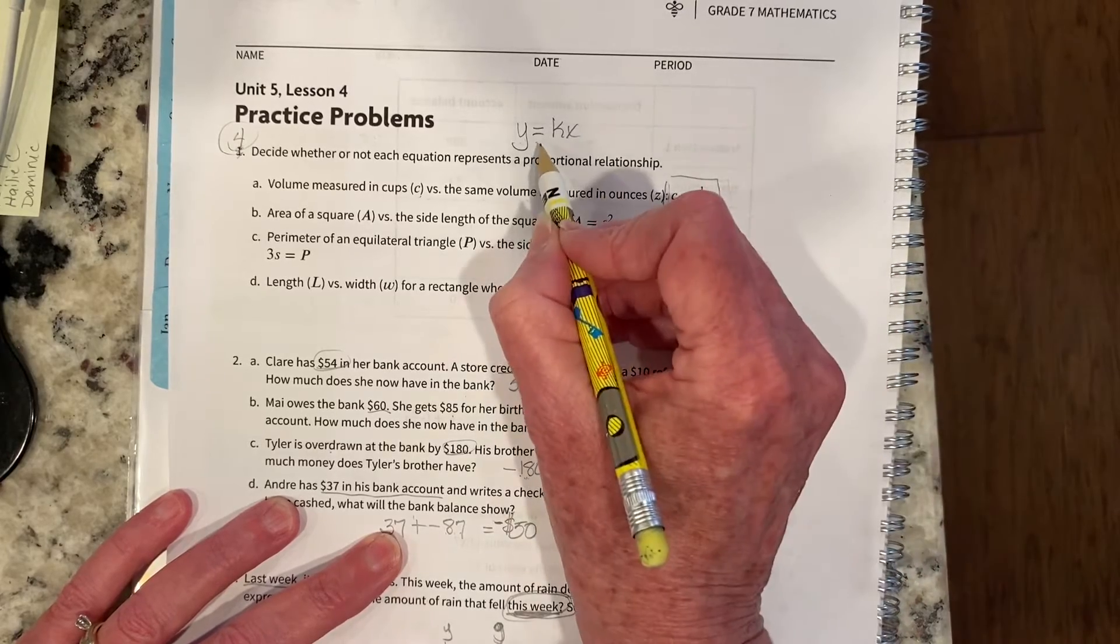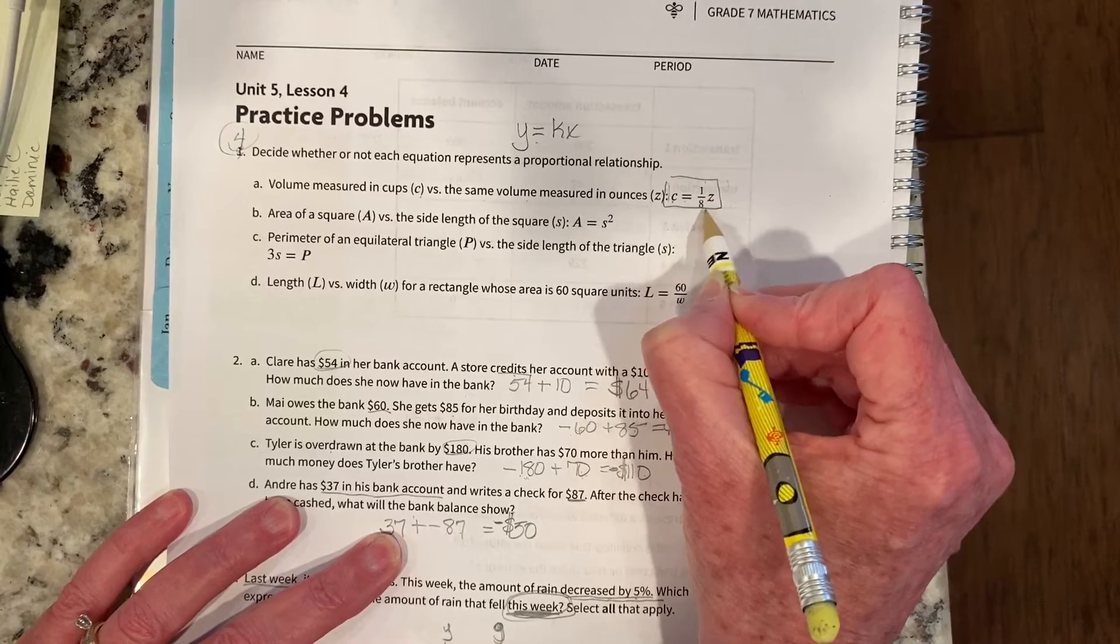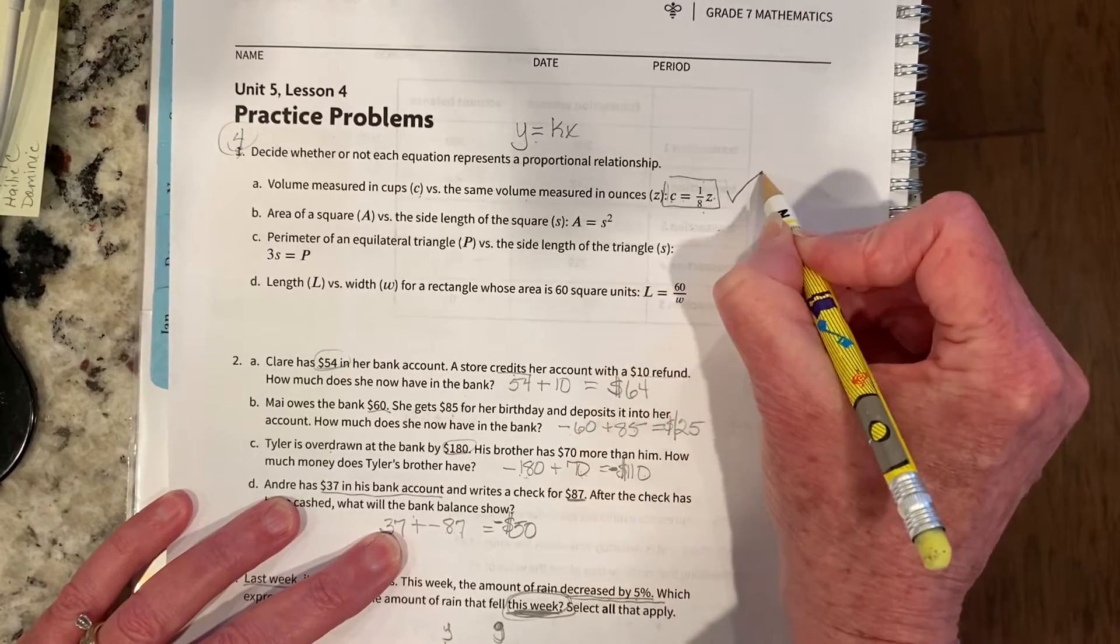Well, looking at that, that is in the form of y equals k, k is 1 eighth of Z, so this is proportional.